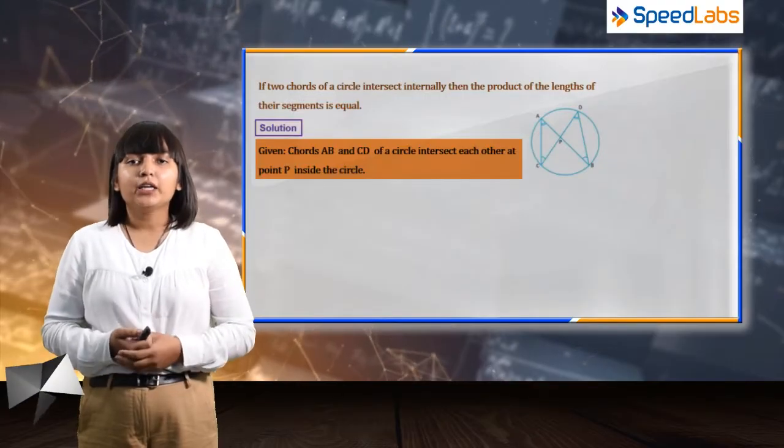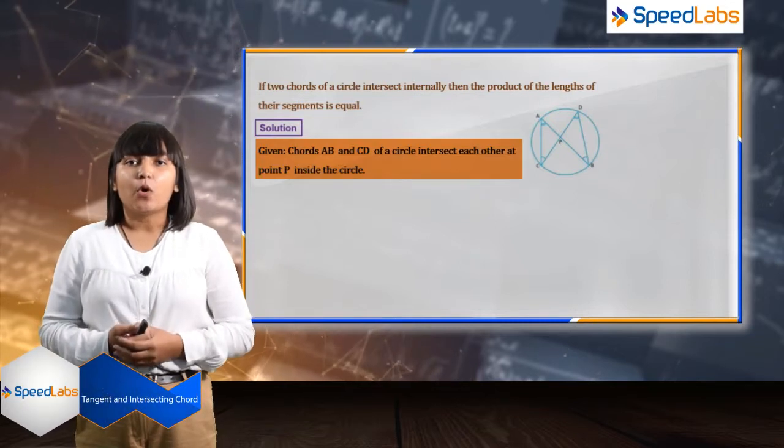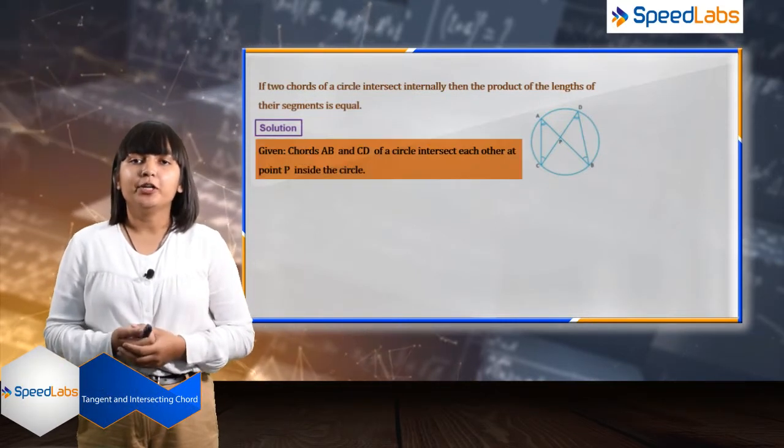In this question, we are given a circle with center P. There are two intersecting chords AB and CD which intersect at point P.